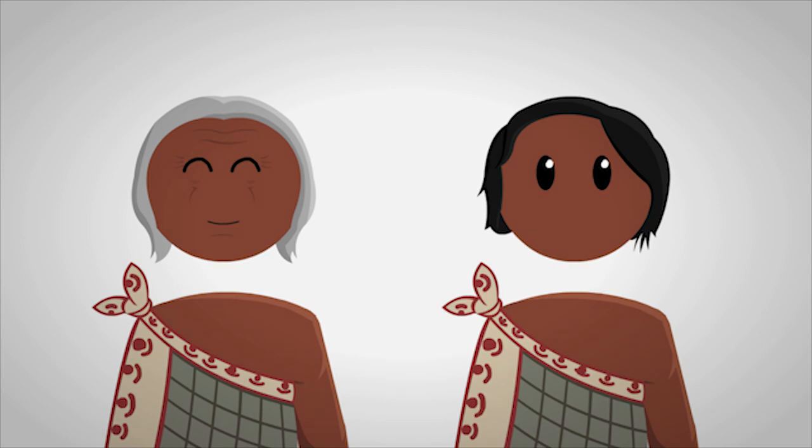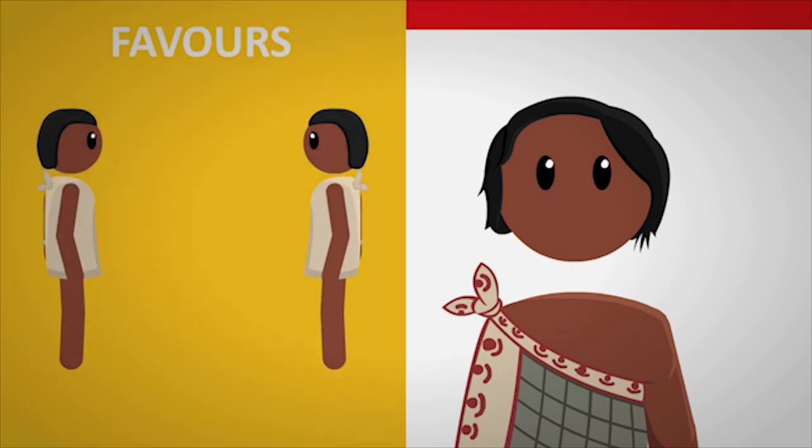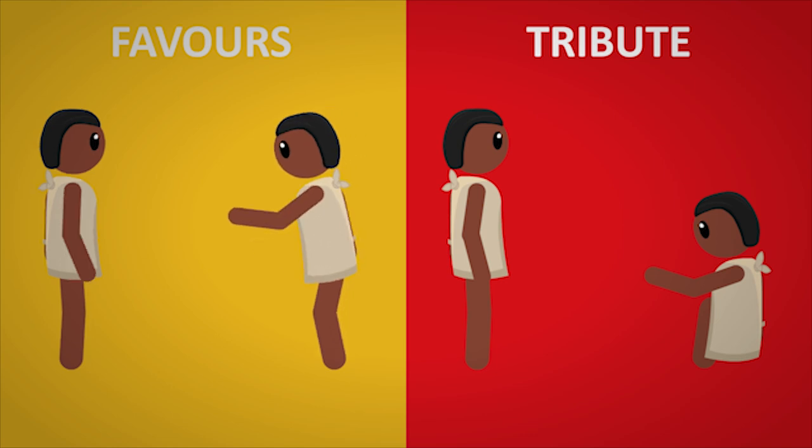Mesoamerican politics revolved around favours and tribute. Friends and allies would grant each other favours, be it food, labourers, or resources. But overlords would demand that as tribute from their vassals. And so, being the vassal, the Aztec requested favours from their overlords.